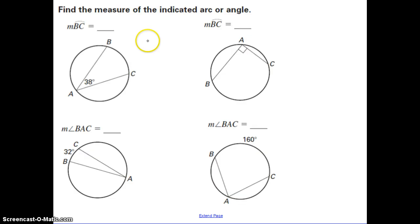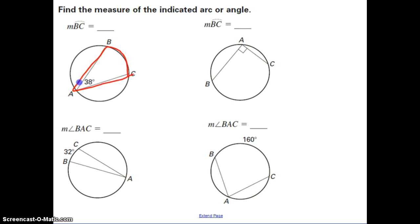Now let's work through a few examples. This one asks us to find the measure of the indicated arc or angle. We're looking for the measure of arc BC, and we have inscribed angle BAC equal to 38 degrees. Since the inscribed angle is half of the intercepted arc, we multiply 38 by 2 to get the measure of arc BC, which is 76 degrees.